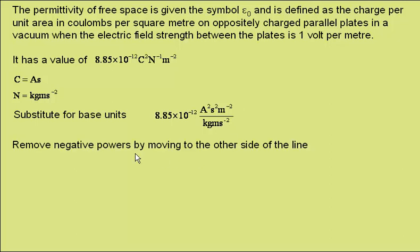Next we can remove negative powers by moving them to the other side of the central line. For example this minus 2 here just means that this is metres squared but should appear on the bottom of the line. So I've done that here.